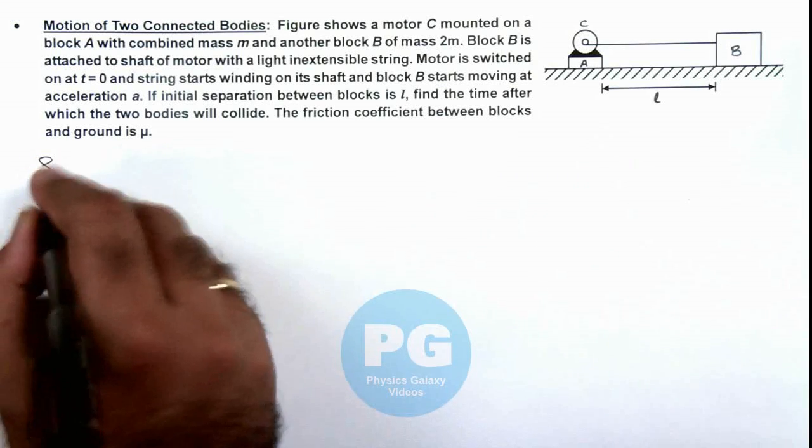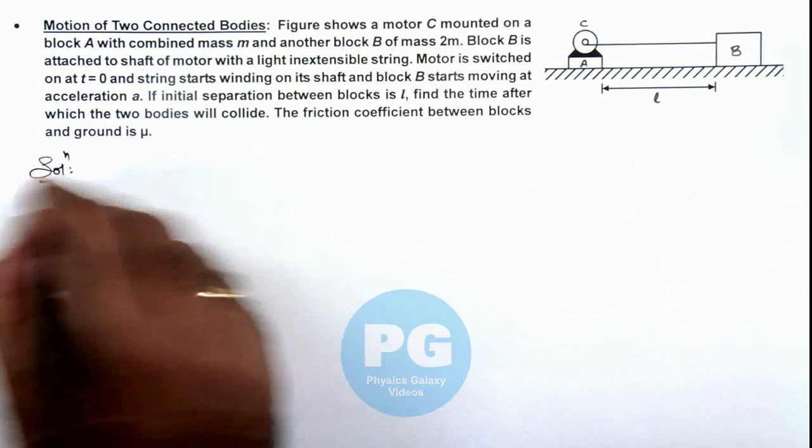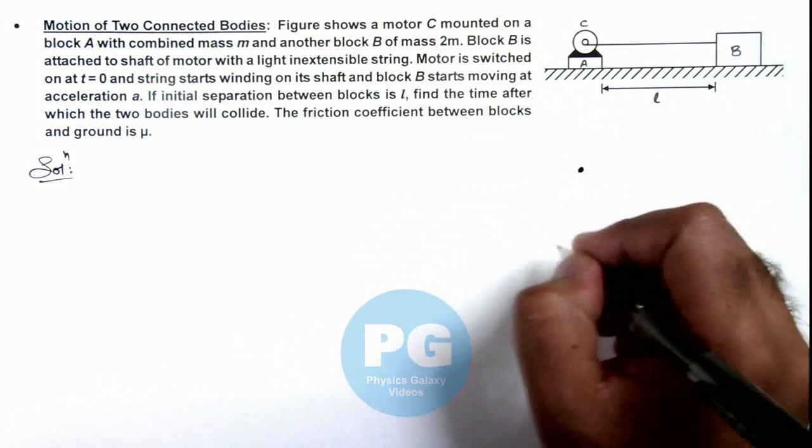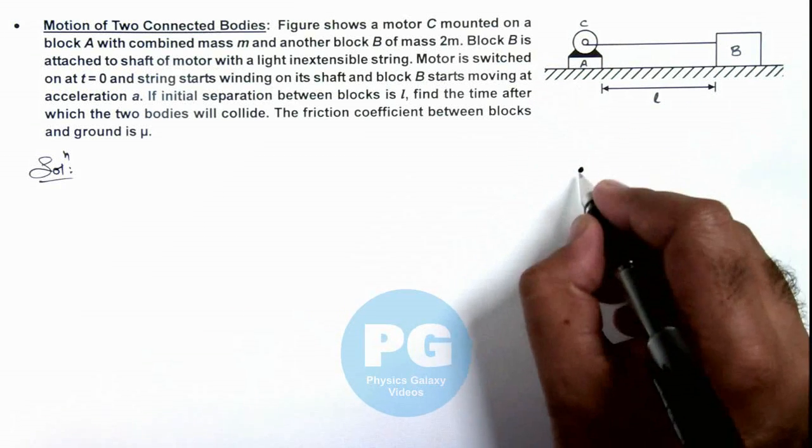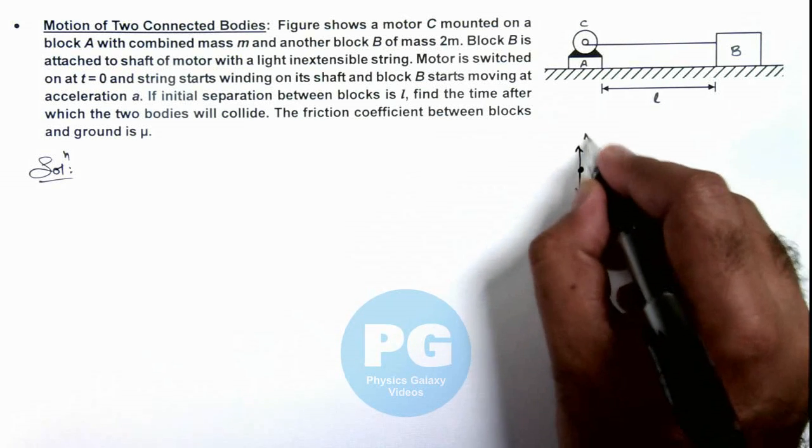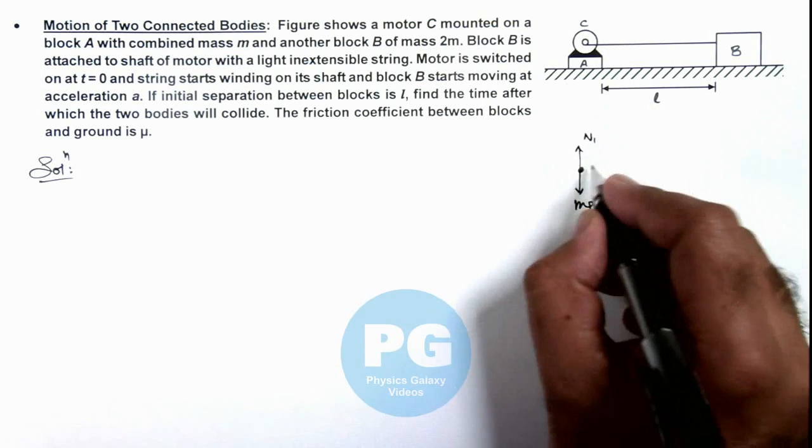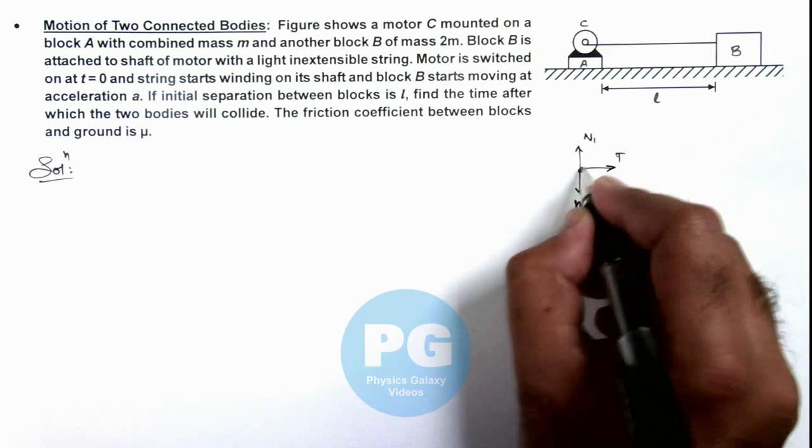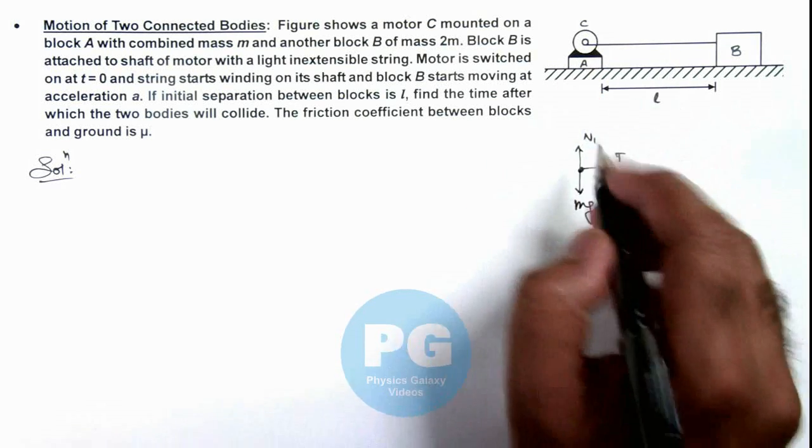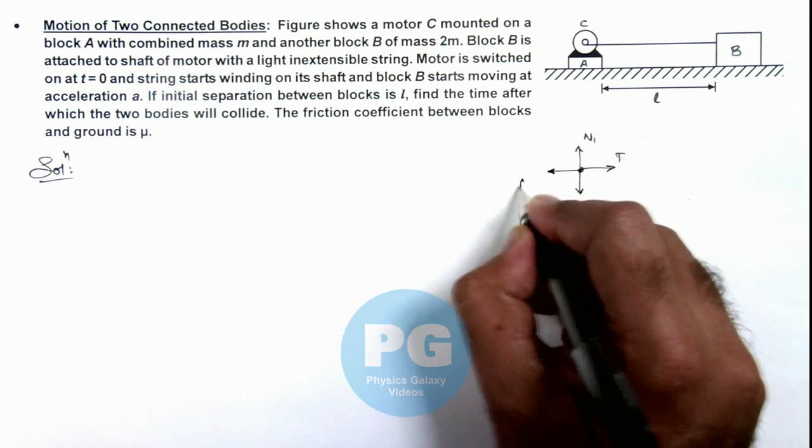So here if we analyze the situation and we draw the free body diagram of first system and second system, then you can see this system is having its weight mg in downward direction, normal reaction upward N1, on the string it'll experience a tension T, and if this is having a tendency to move to right it'll experience a friction f1.